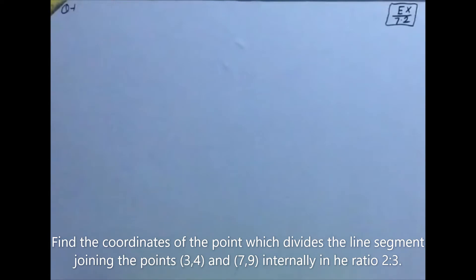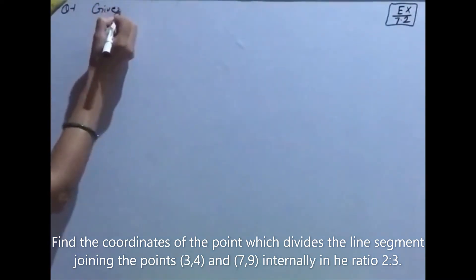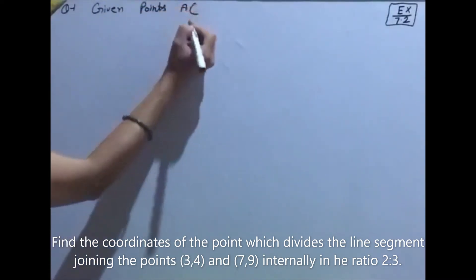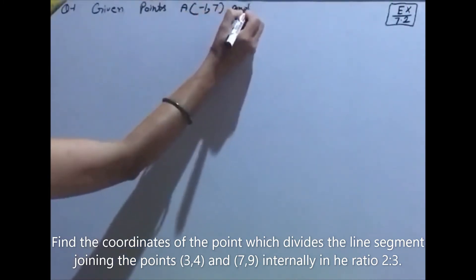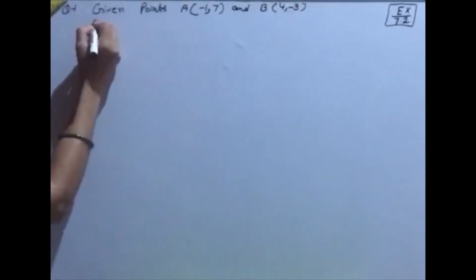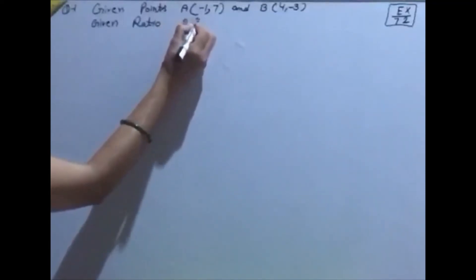First of all given points लेंगे। Given point A is (-1, 7) and B is (4, -3). Given ratio हमारे पास है 2 ratio 3।